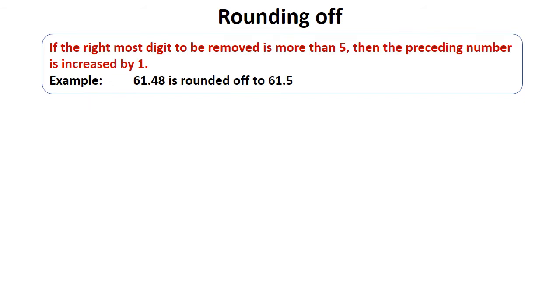In rounding off, the extra digits are dropped with or without minor changes in the figures retained. One should keep the following points in mind while rounding off numbers. First rule: if the rightmost digit to be removed is more than 5, then the preceding number is increased by 1. For example, in 61.48, the rightmost digit to be removed is 8, which is more than 5.